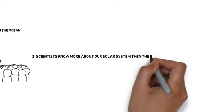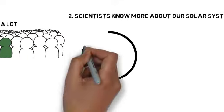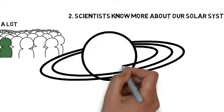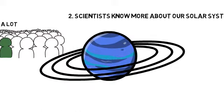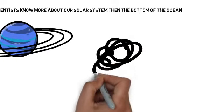Next: scientists know more about our solar system than the bottom of the ocean. The reason for this fact is that space is not that hard to get into. You just have to build a rocket that works, or maybe build a robot that can orbit a planet.